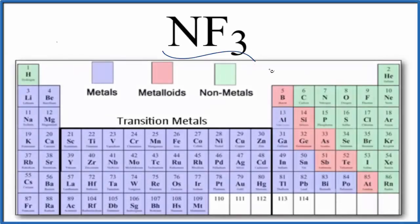Let's take a look at whether NF3 is ionic or covalent. This is nitrogen trifluoride. First thing we do is look at the periodic table. Nitrogen is a nonmetal, fluorine is a nonmetal as well, so we would expect this to be a covalent compound, also called a molecular compound.